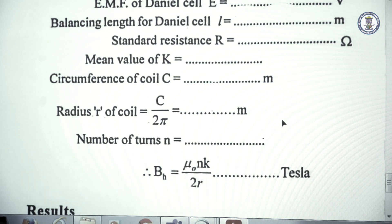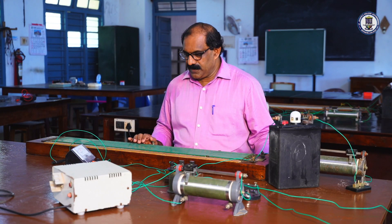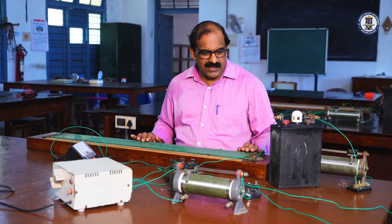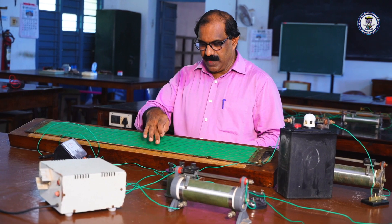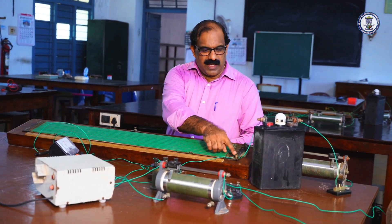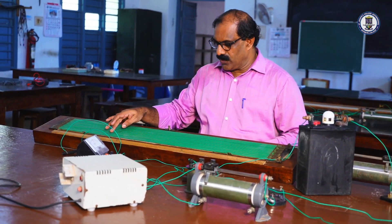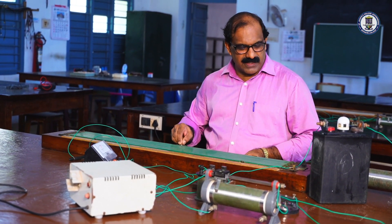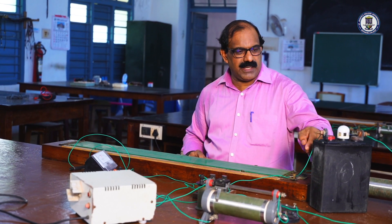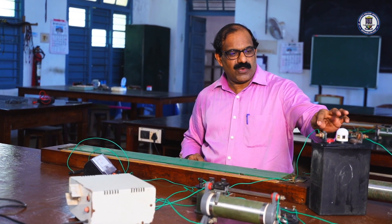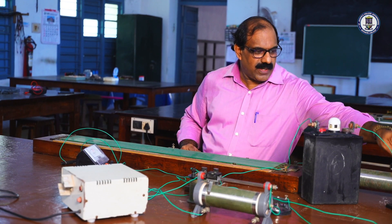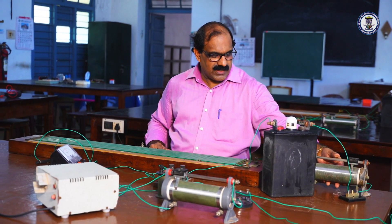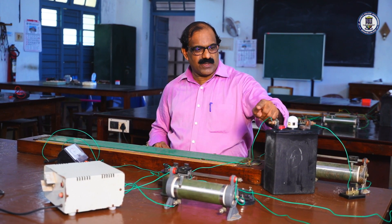Now the actual experimental setup: to determine the reduction factor of the tangent galvanometer, we have the potentiometer apparatus between A and B. A uniform wire of length 10 meters is arranged in 10 rows. The primary circuit between A and B is connected to the positive of an accumulator, through a rheostat to terminal B.